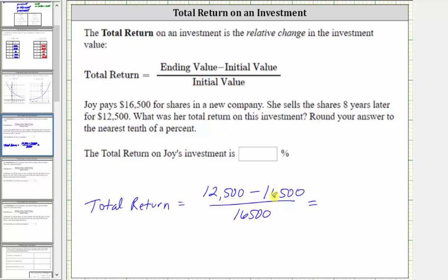Well, 12,500 minus 16,500 is negative 4,000. So we have negative 4,000 divided by 16,500. And now we need to find this quotient.